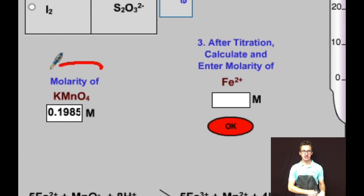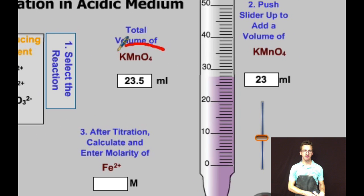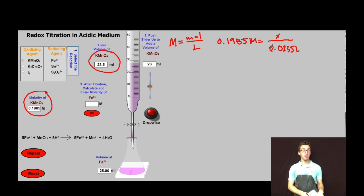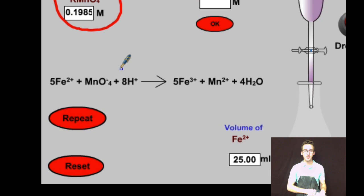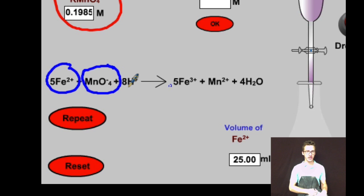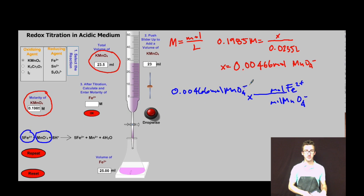Alright, so first thing I'm going to do is take the molarity and volume of my potassium permanganate solution. I'm going to multiply my molarity by my volume to get my number of moles of potassium permanganate that I added. Boom! Yes, I used the calculator. Next, let's think about the relationship between permanganate ion and iron(II) in our balanced redox reaction. That relationship is a 5 to 1 relationship.